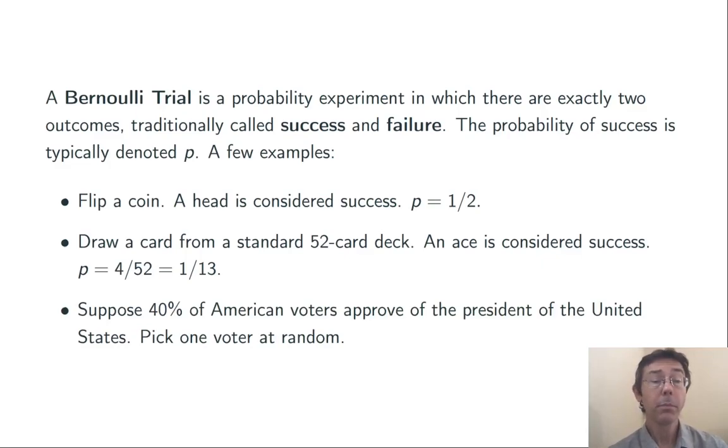Suppose 40% of American voters approve of their president. Pick a voter at random. P is 0.4 here, so we're considering it to be a success if we select a voter who approves of the president. Now this is a good time to mention success and failure are technical terms here, not political statements. We aren't considering whether we personally approve of the president or not.